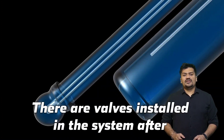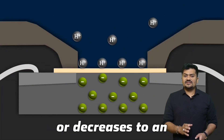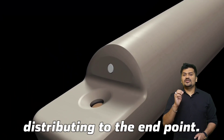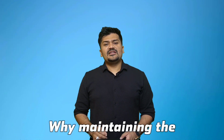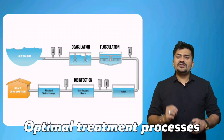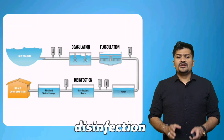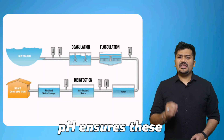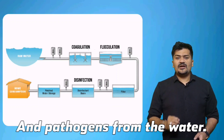pH sensors are installed to measure the pH of the water flowing through the system. There are valves installed after these sensors to divert the water if pH increases or decreases to an alarming level, preventing bad water from being distributed to the end point. Maintaining the correct pH level is very important. First, for optimal treatment processes: different treatment processes such as coagulation and disinfection are sensitive to pH levels.